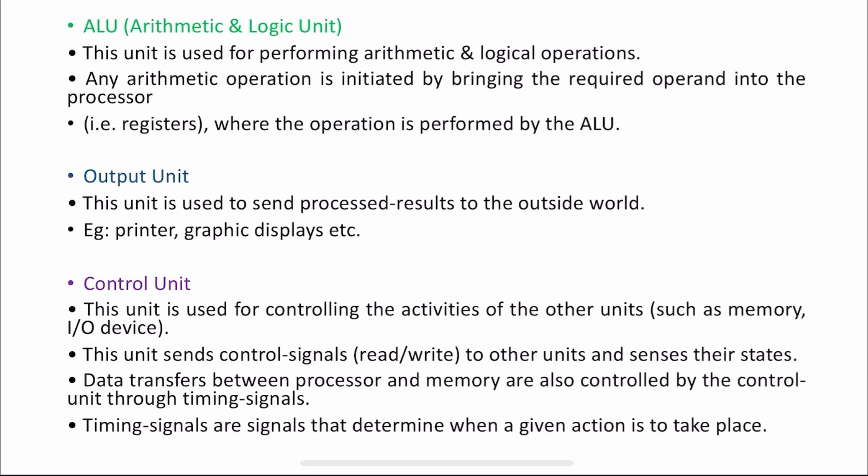The fifth one is the control unit. This unit is mainly used to control the activities of the other units such as memory and I/O devices. You need to pass your information from input devices to memory, then from memory to CPU — that is ALU — and from ALU to output. How your information is passed from one unit to another is mainly because of the control unit. It takes care of the transmission of contents from one unit to another, and it communicates with every unit by sending control signals.